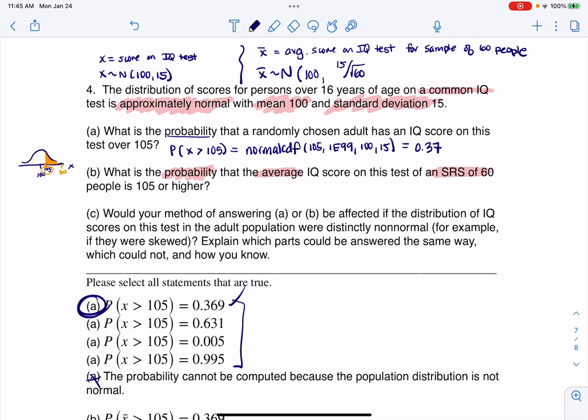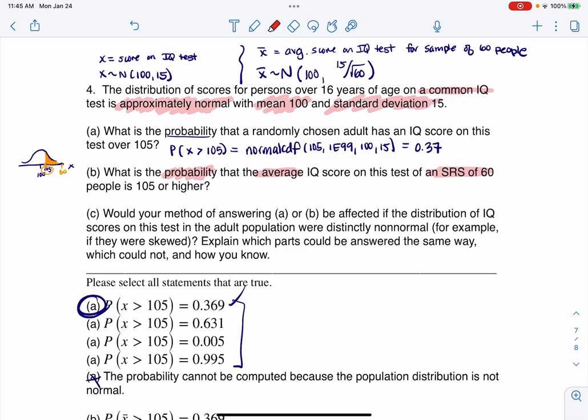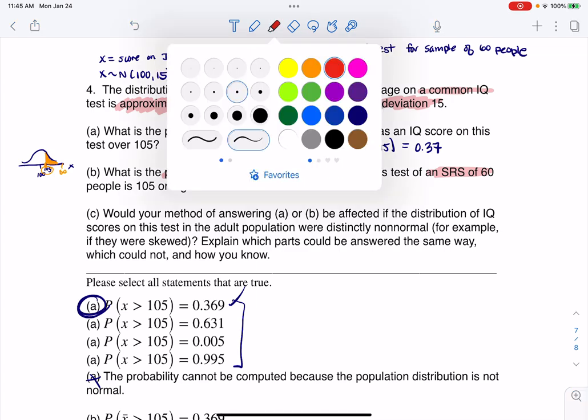So I'm going to have the same mean of 100, but my standard deviation becomes this standard error. I'm going to do 15 divided by the square root of 60. And whatever that number is equal to, that's the one I'm going to be rolling with. So when I look at these problems, things I do want to point out. Let's go to yellow.